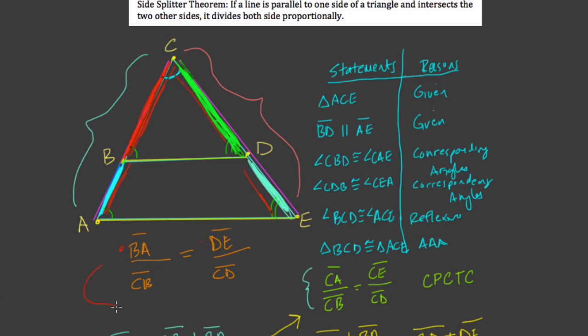And we can flip this upside down to get usually what I think you would see for the side splitter theorem. Just reverse the terms. CB over BA equals CD over DE. And that would just mean that CB, this length, to BA is proportional to CD, this length right here, to DE.